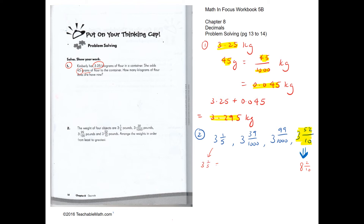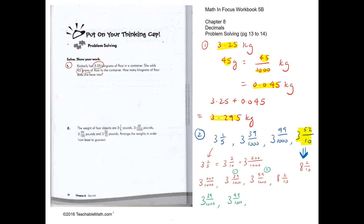To compare 3 and 1 fifth, we first convert to tenths by multiplying by 2, then convert to thousandths by multiplying by 100. After converting all values to a common denominator of 1000, we can arrange them. In ascending order: the smallest is first, followed by the second, third, and fourth values, writing each back in its original form.